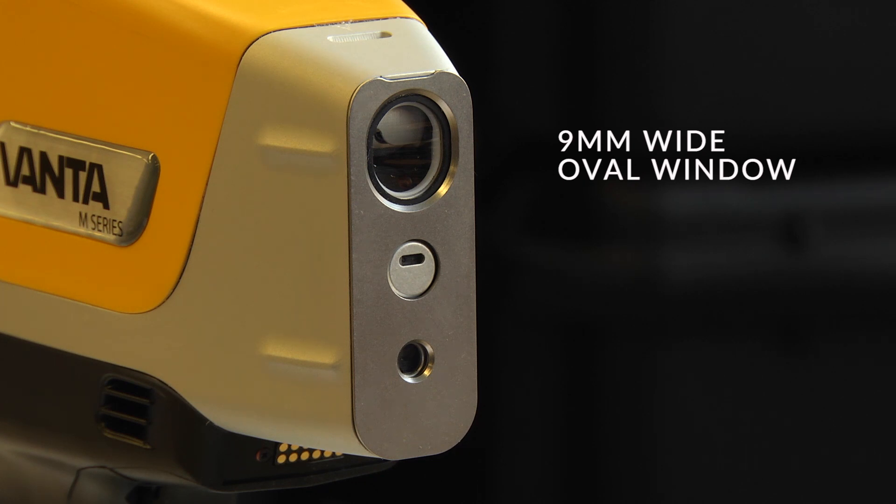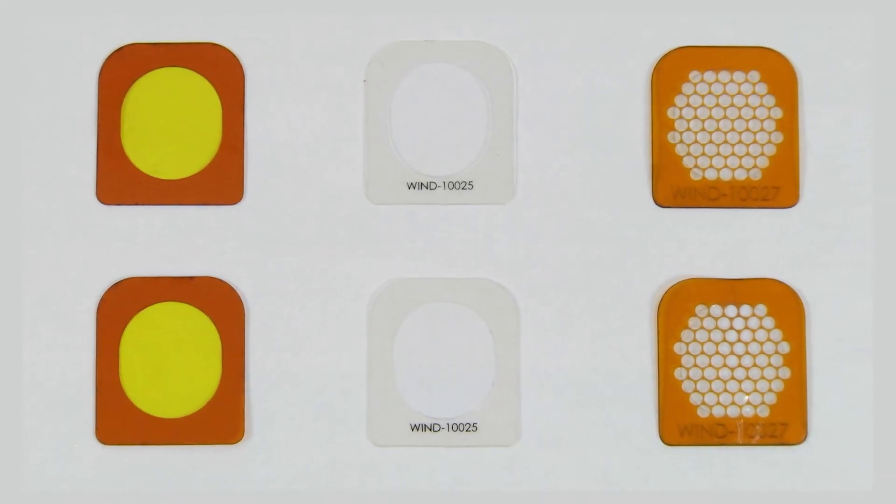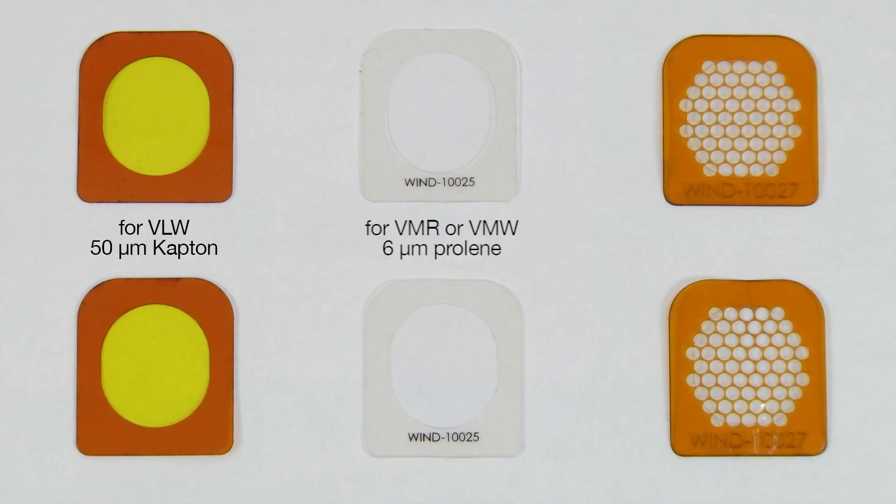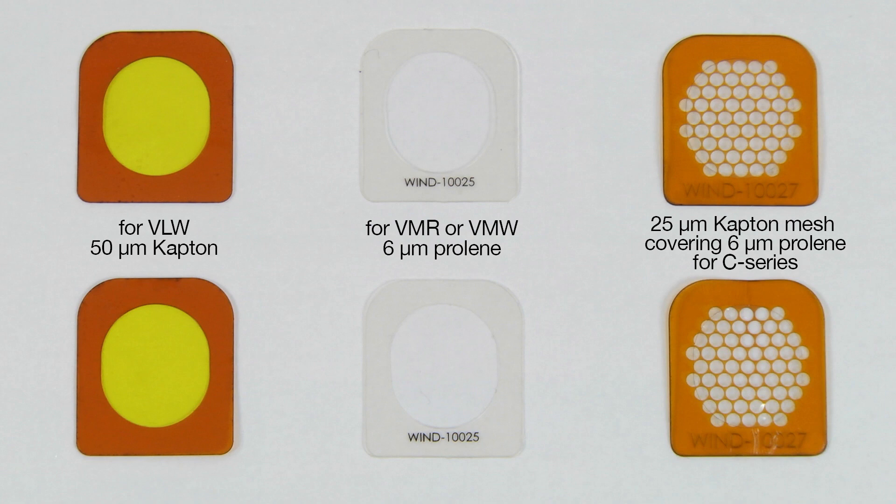So whatever you place in front of that area will be measured. The second thing I want to point out is that we have various Vanta models and those models have different windows and those windows have different thicknesses. And so that will have an impact on the model that you choose to purchase.